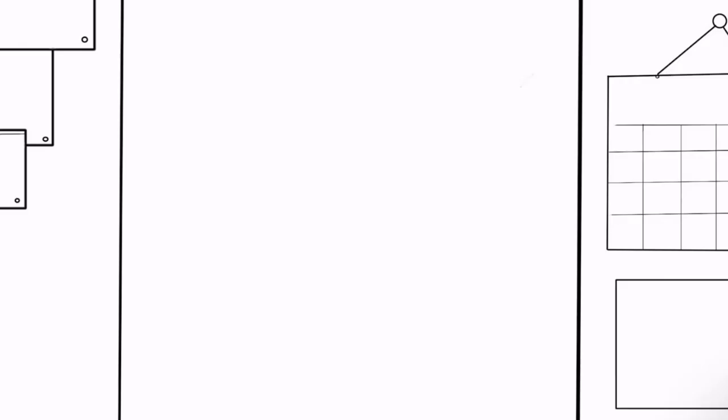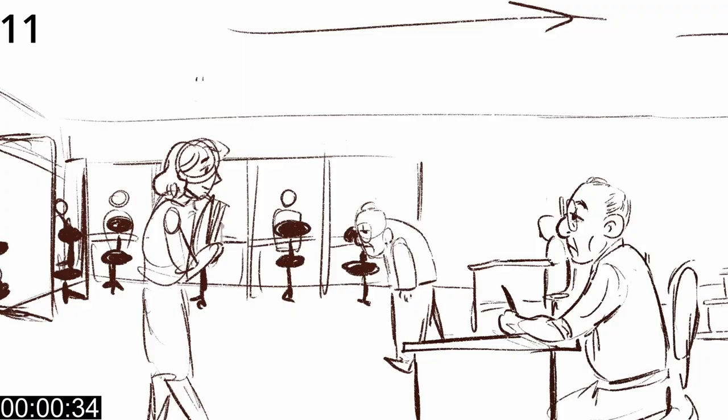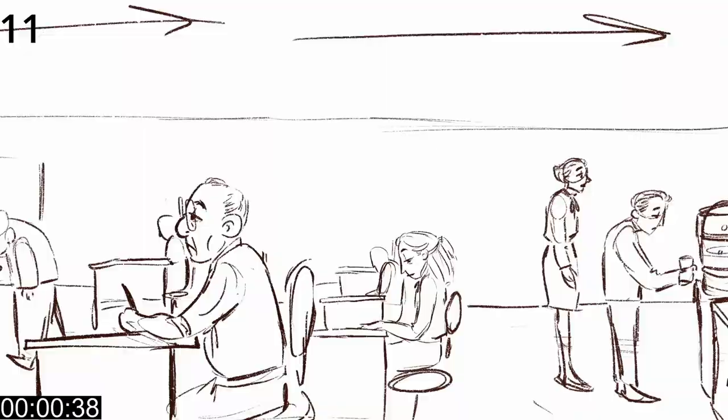These are some of the backgrounds our background artists have been working on — part of Wesley's office and the outside of his office on the city street. I give the artist a description of what the background should look like and what it should include, then they're free to add to that as well. They reference the animatic for the shot they're working on.